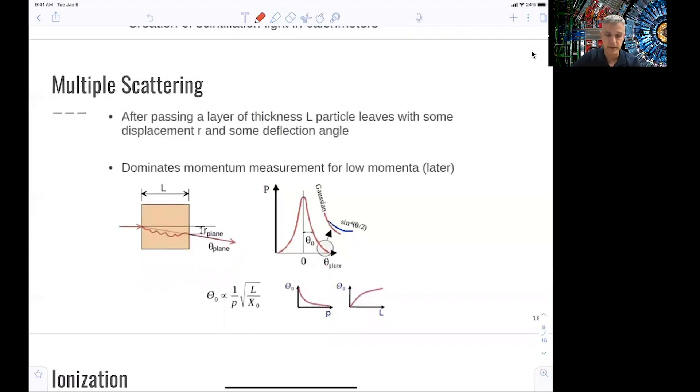Let's start with multiple scattering. After passing a layer of thickness L, a particle leaves with some displacement R and some angle of deflection. So that is problematic, because you lose information through the random process. And you see here this random Gaussian-like distribution, which is rather annoying. So the key here is to minimize the radiation length of the particle going through.